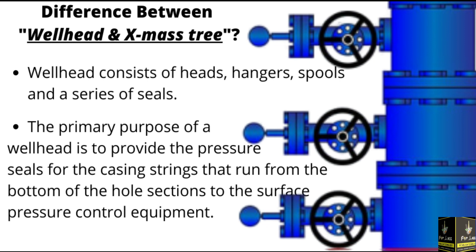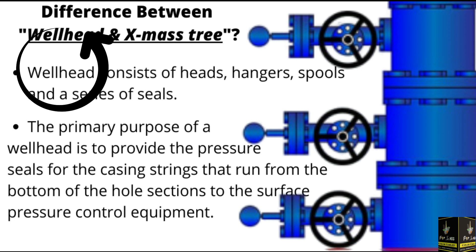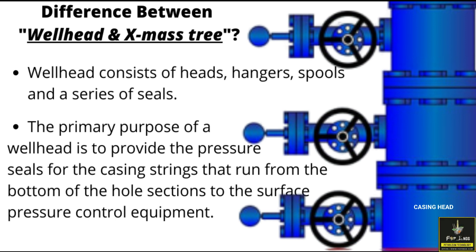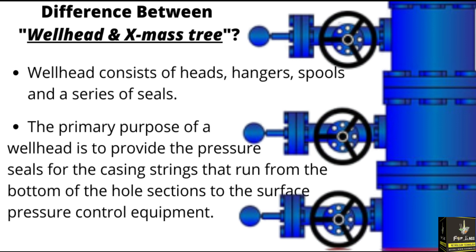The word 'wellhead' explains itself — it is something that belongs to the head, like tubing head and casing head. The wellhead consists of hangers, spools, and a series of seals. The primary purpose of the wellhead is to provide a pressure seal for the casing string that runs from the bottom of the hole towards the surface.